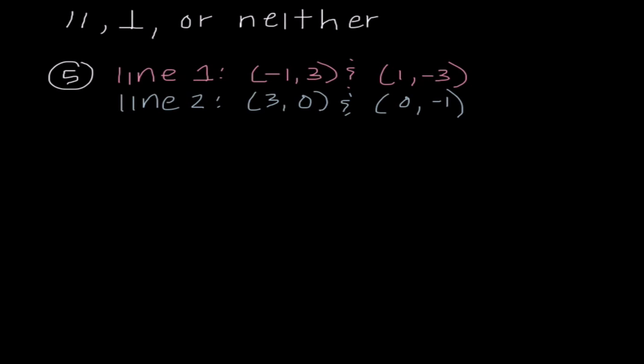So what we're doing with this information, we need to determine are these two lines parallel, perpendicular, or neither. So in order to do that, we're going to have to find the slope of each of these two lines. So I'm going to start with line 1. So I have negative 3 minus 3 over 1 minus negative 1. So I have negative 6 over 2, which is negative 3. So let's think for a second.